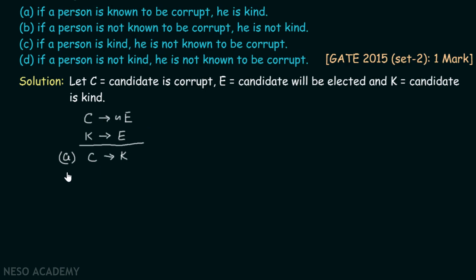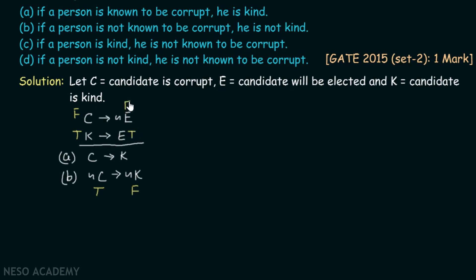Option B: if a person is not known to be corrupt, then he is not kind (¬C → ¬K). Let ¬C be true and ¬K be false — so C is false and K is true, making the conclusion false. With K true, premise S2 (K → E) requires E to be true, so ¬E is false. With C false, premise S1 (C → ¬E) is vacuously true. Both premises are true and the conclusion is false, so this argument is also invalid.